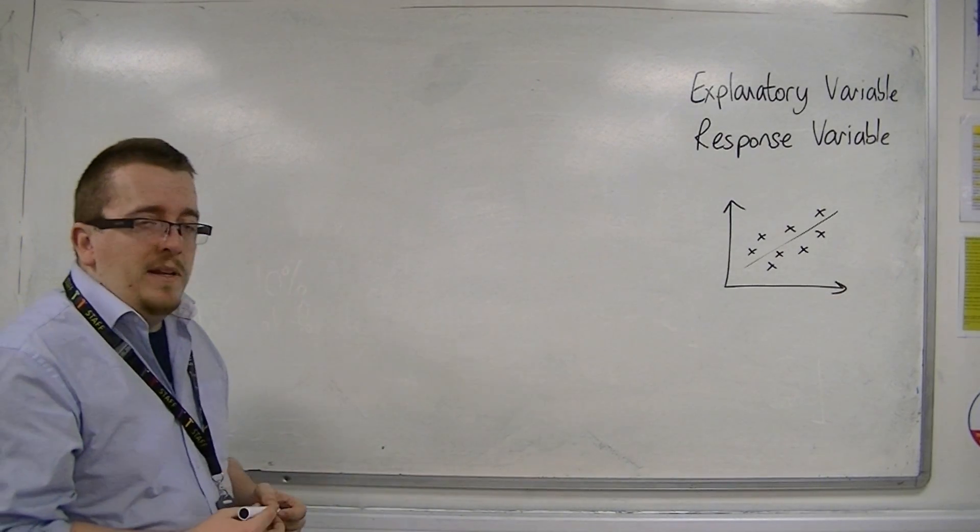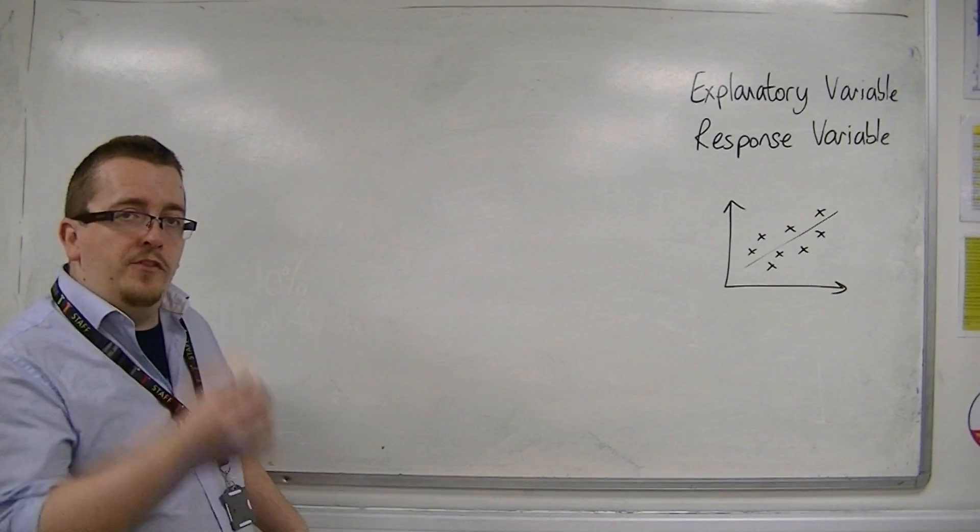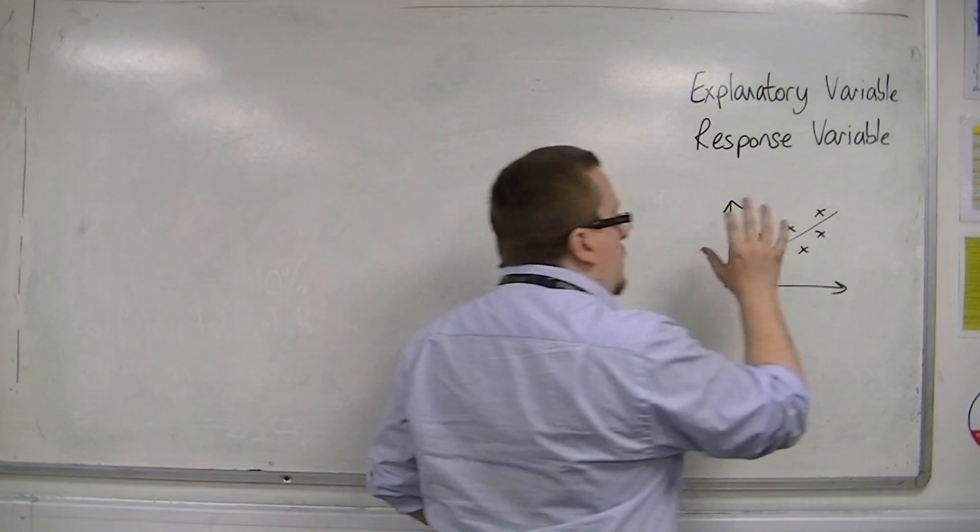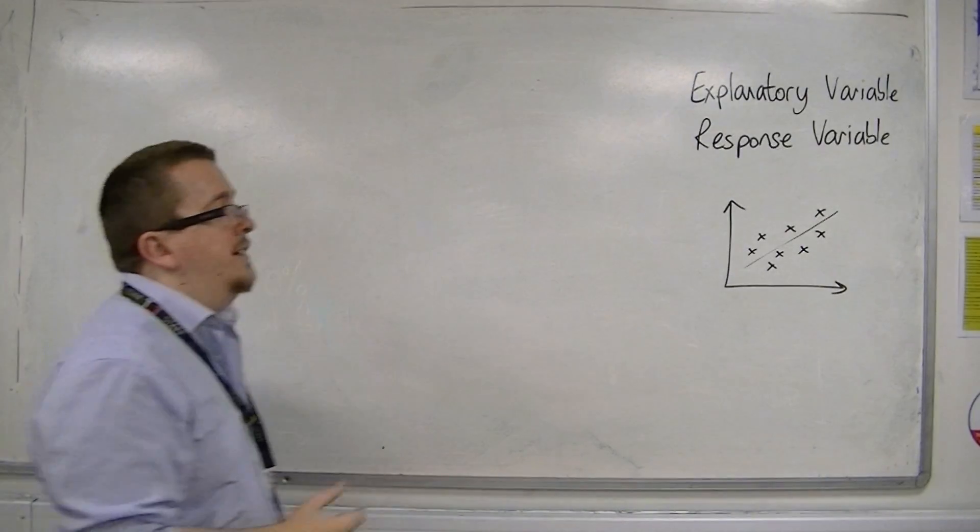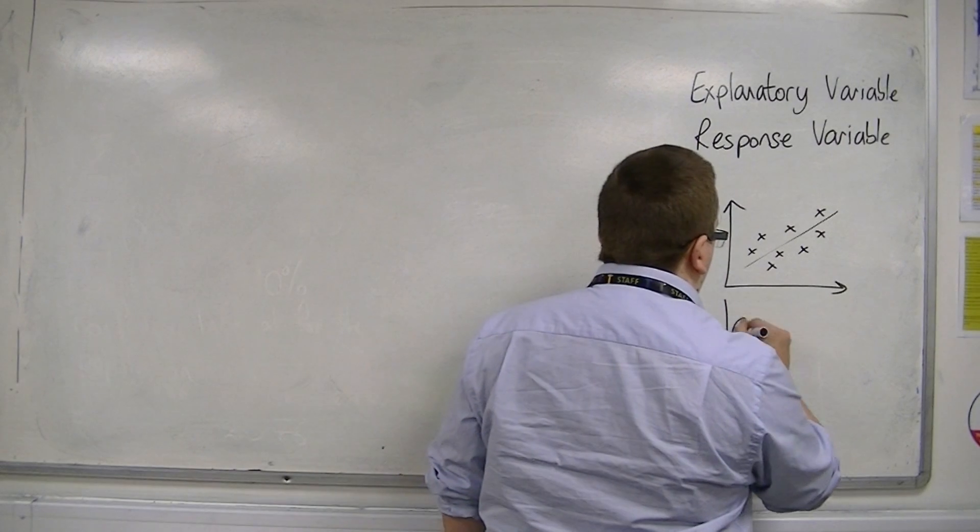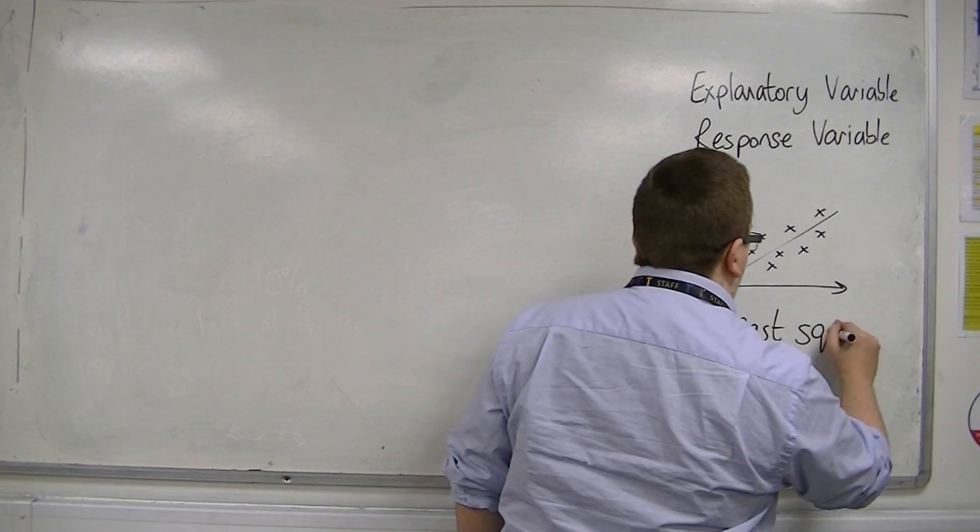Now, what we're going to be doing is actually calculating the correct equation of the line, the line that best represents that data. And it's known as the least squares regression line.